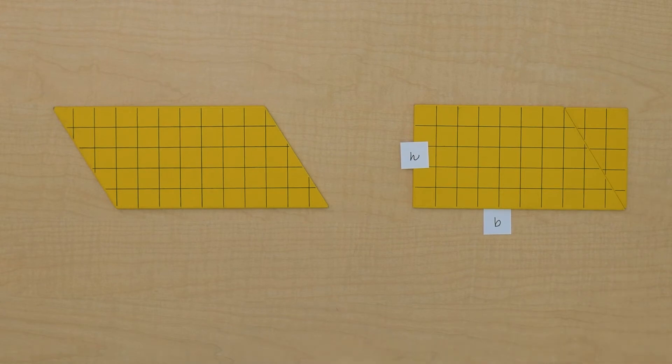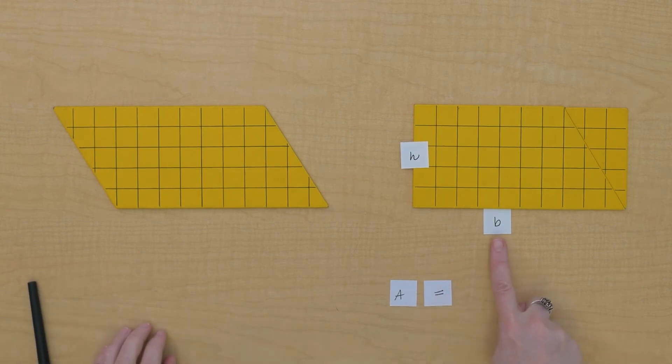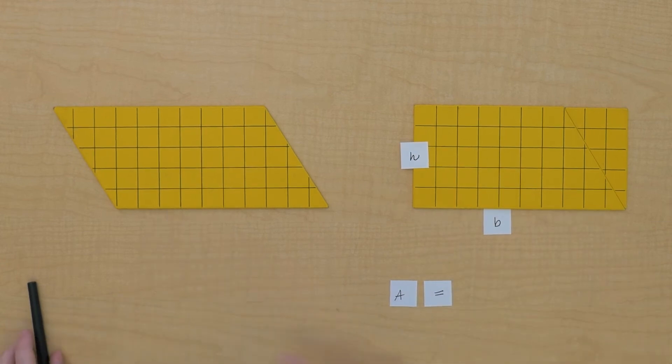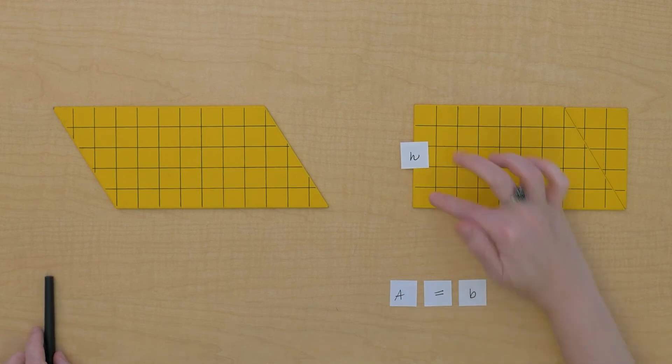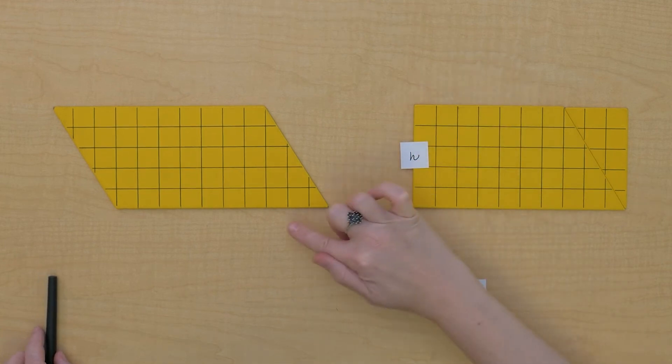So this area is going to equal the base - this is the same as the base of the parallelogram, so we can just leave that the same. And the height of this rectangle is the same as the height of the parallelogram, so we can leave that the same.